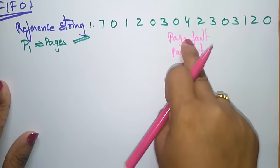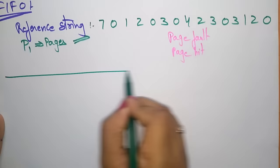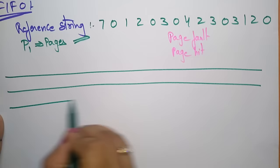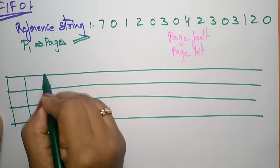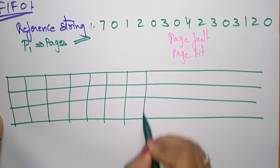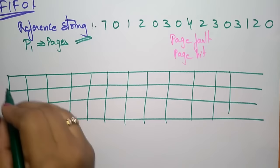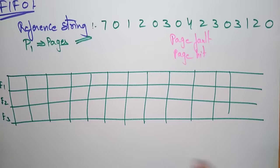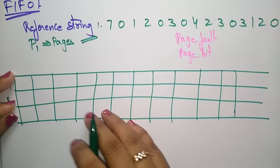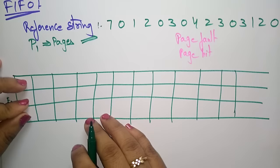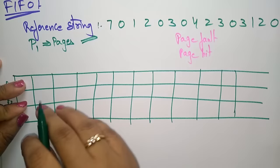Let us take the main memory as holding only three frames at a time — only three pages. This is the main memory with frame one, frame two, and frame three. The main memory can hold only three pages. If you want to store another page, it has to be replaced by following the concept of First In First Out.